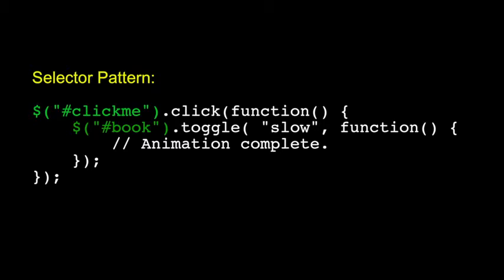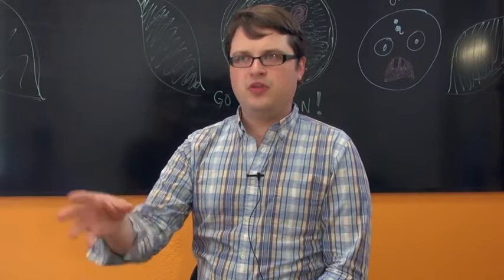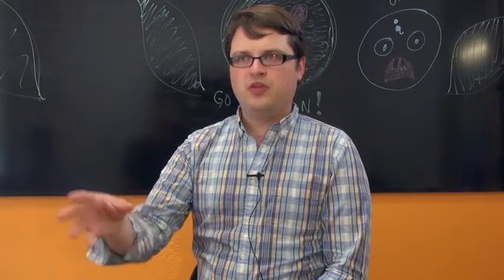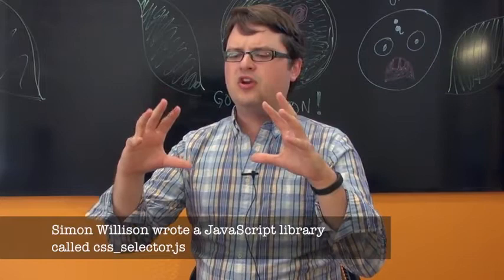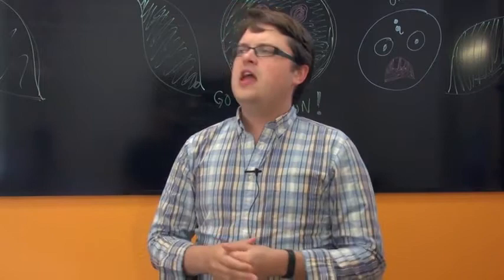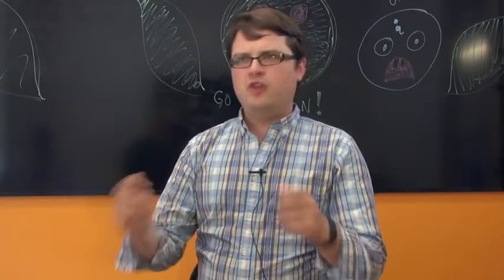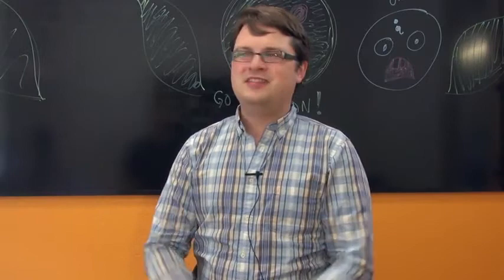The selector pattern came from, at least where I saw it from, was this library written by this developer in the UK, Simon Willison. He created this method, like get elements by selector, if I remember correctly, and it allowed you to just write a simple CSS selector and find some elements. But it was very primitive. You could only do the most basic of queries. It didn't have the full nice CSS 2 and CSS 3 and everything.